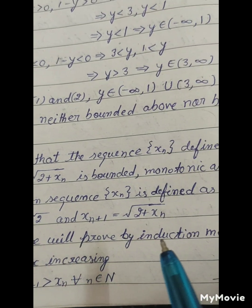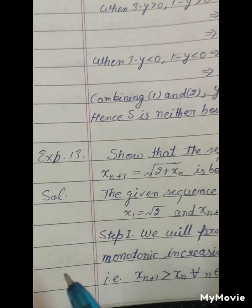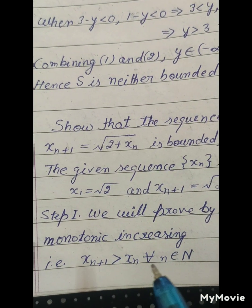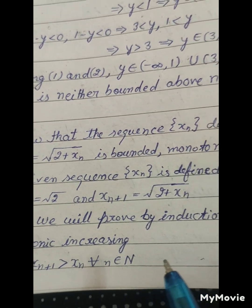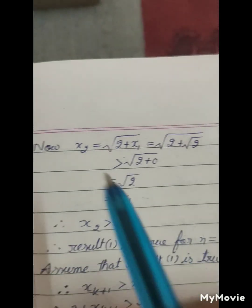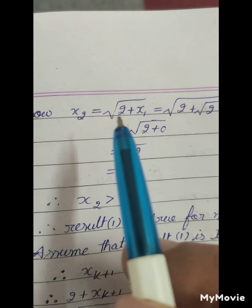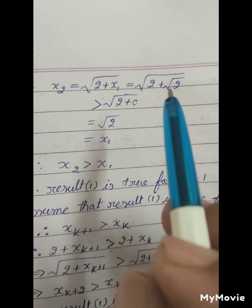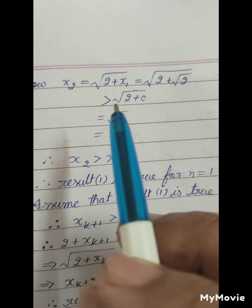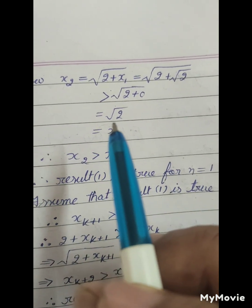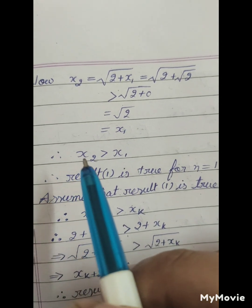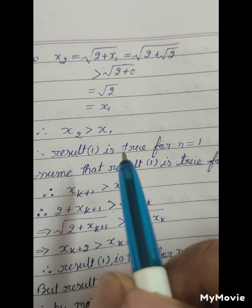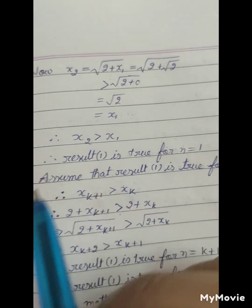Step 1: We will prove by the induction method that xn is monotonically increasing, that is xn+1 is greater than xn for all n in N. Now x2 equals square root of 2 plus x1 equals square root of 2 plus square root of 2, which is greater than square root of 2 equals x1. So x2 is greater than x1, and the result is true for n equals 1.